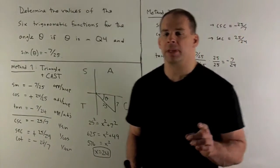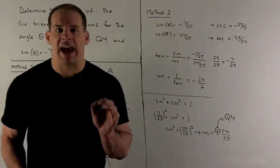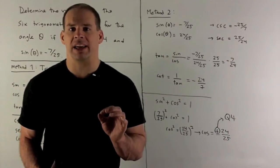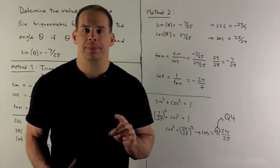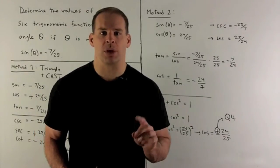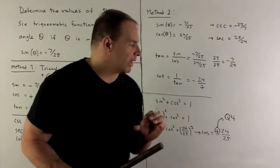The other method, same idea. We'll still need CAST, but instead of using a right triangle, we're just going to use a trig identity to get our answers out. The identity I use, we have cosine squared plus sine squared is equal to 1.